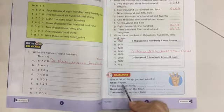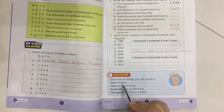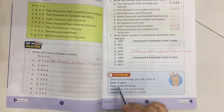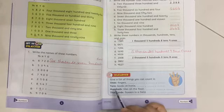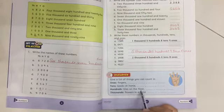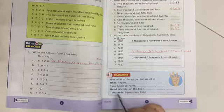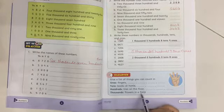Ones fingers? Fingers कैसे आएंगी? Fingers कितनी होती है? Tens books at home, hundreds tiles on the floor, thousands flowers in a field.